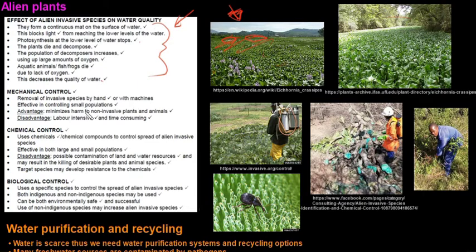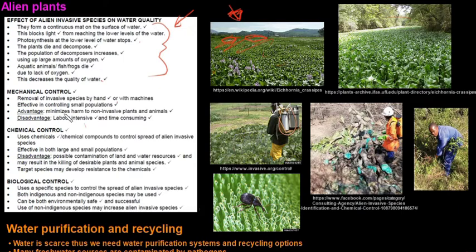Mechanical control, chemical control, and biological control are the three methods to get rid of alien plants or exotic plantations. Mechanical control is when you remove the invasive species by hand or with machines. This is effective in controlling small populations because it is extremely time consuming. The advantage is that it minimizes harm to non-invasive plants and animals, as no chemicals are used — it is very target specific, only targeting the alien plants.